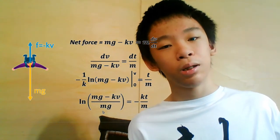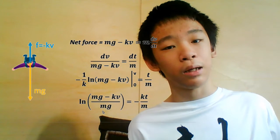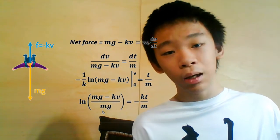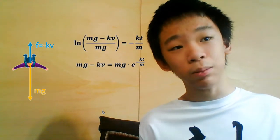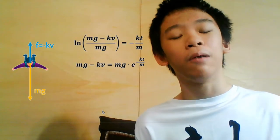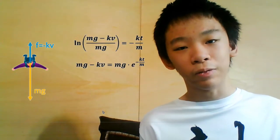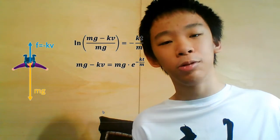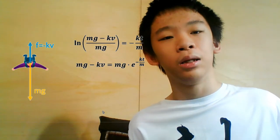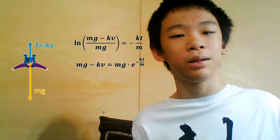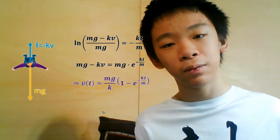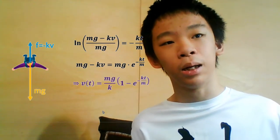We move the negative k to the other side, exponentiate both sides, and simplify. We get that v(t) equals mg over k times (1 minus e to the negative kt over m).